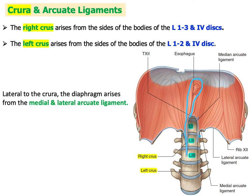The left crus is a little bit shorter than the right crus. On the left side it originates from the left lateral side of lumbar vertebrae L1 and L2 only, and ascends upward. The medial borders of the right and left crura unite to form what we call the median arcuate ligament. We will talk about this in more detail.